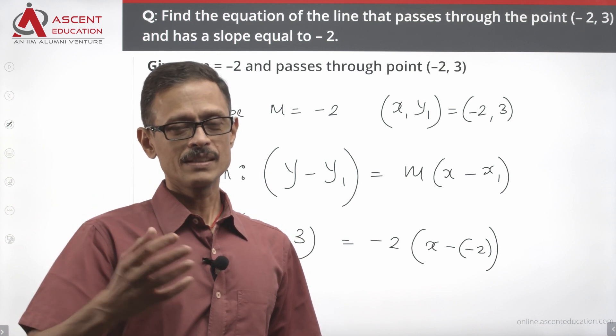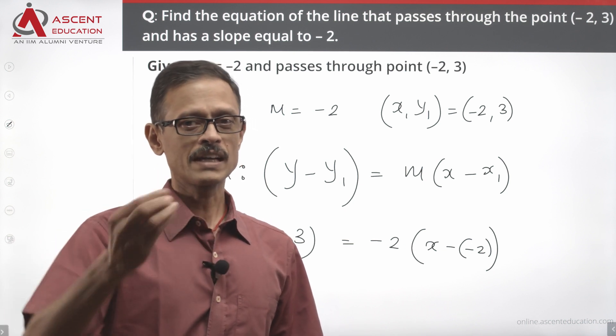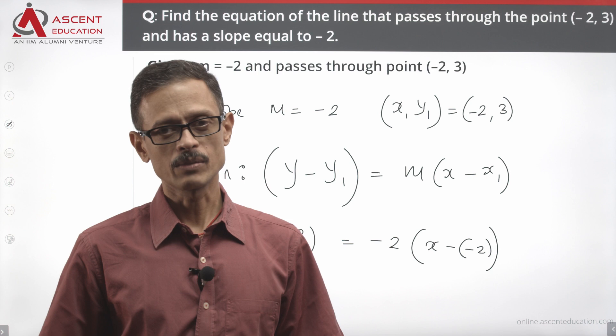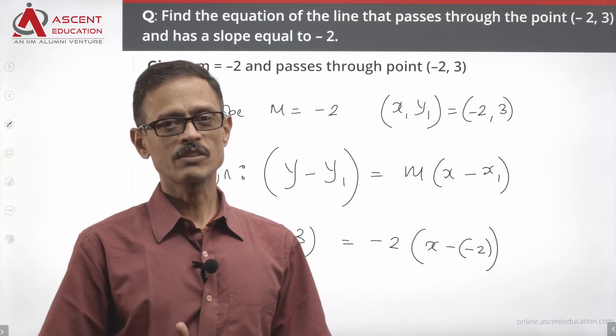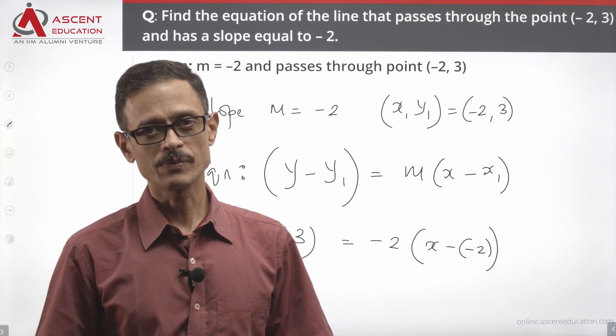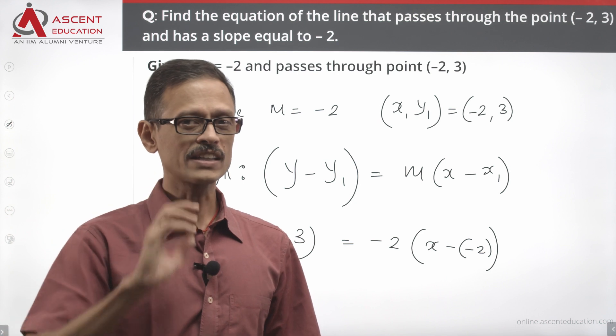TANCET usually happens in March, so from August or September, 6 to 7 months of preparation should be done. With 6 to 7 months of exam preparation, you can reach the top 50 ranks.